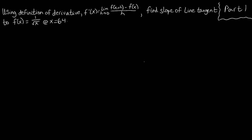In this video, we're going to look at finding the equation of a tangent line at a point. We're told, using the definition of a derivative — which we're given here — we want to find the slope of the line tangent to f of x equals 1 over root x at x equals 64. So we have our point in question, we have our function, and now we need to use the definition of the derivative to find the equation of the tangent line at that point.